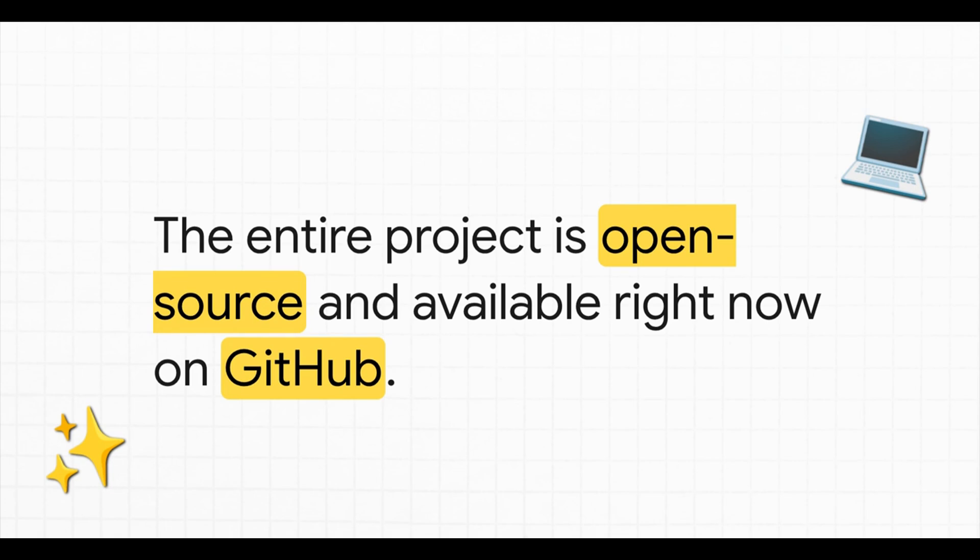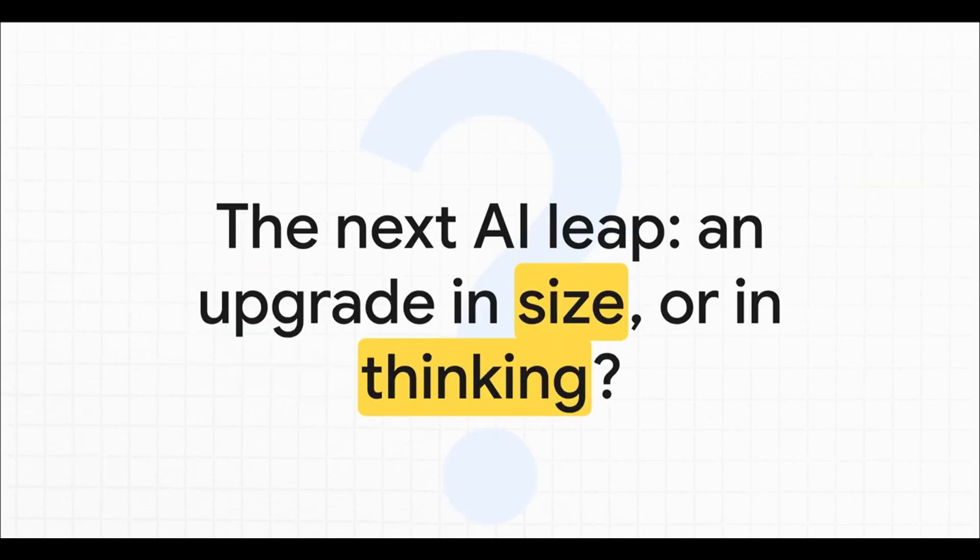the entire project is open source. So, if you want to dive in, you can check it out, run the code, and even start tinkering with it yourself right now on GitHub. All of this really leaves us with one big, provocative question for the future of AI. As we keep pushing for more powerful systems, is the next great leap going to come from just building bigger and bigger models? Or is it going to come from a fundamental architectural upgrade in how these machines actually think? HRM seems to be suggesting the answer is the latter.